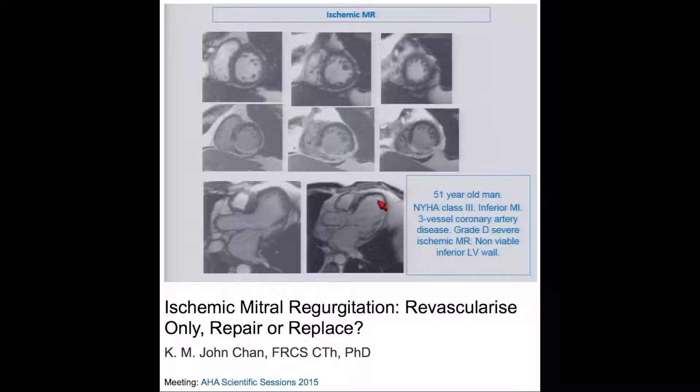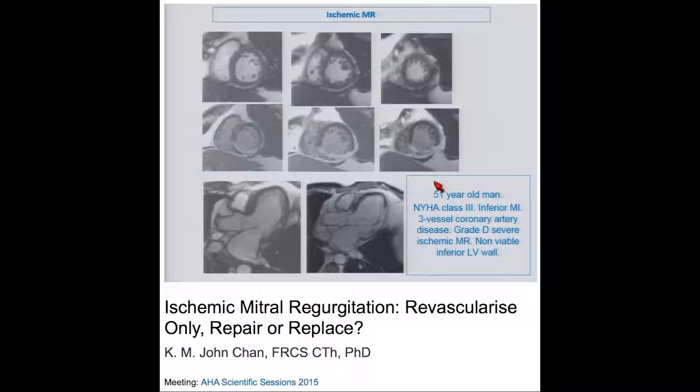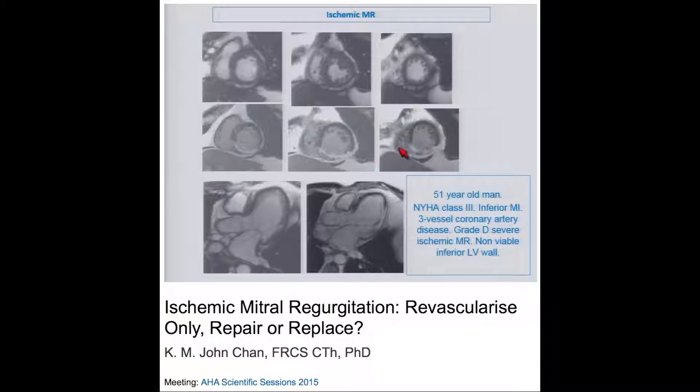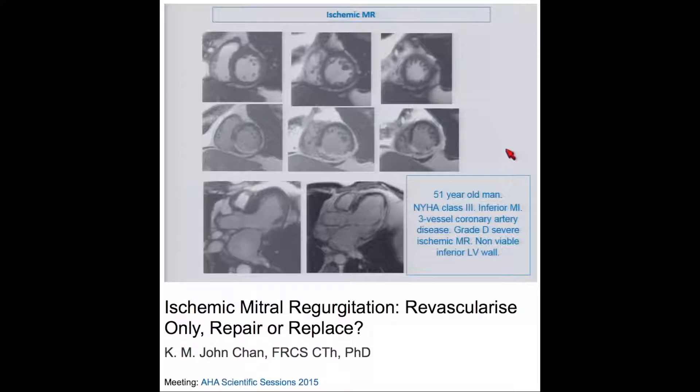This is an example of a patient with ischemic mitral regurgitation — a 51-year-old gentleman in NYHA class 3. He had a previous inferior myocardial infarction, 3-vessel coronary artery disease, and grade D severe ischemic mitral regurgitation from a non-viable inferior LV wall. You can see this large infarct in the inferior wall, the corresponding area of LV not thickening, resulting in tethering of the posterior leaflet and significant mitral regurgitation.